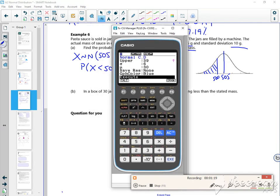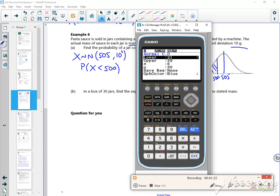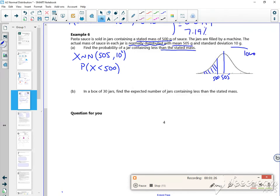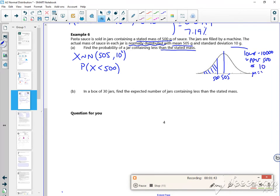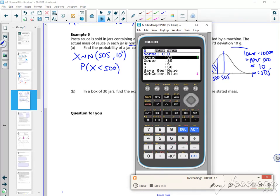So exit. So my lower is going to be minus 10,000. My upper is 500. Sigma we've said is 10. And mu is 505. Just making sure I'm not running out of time. So minus 10,000, 500, sigma is 10, 505.